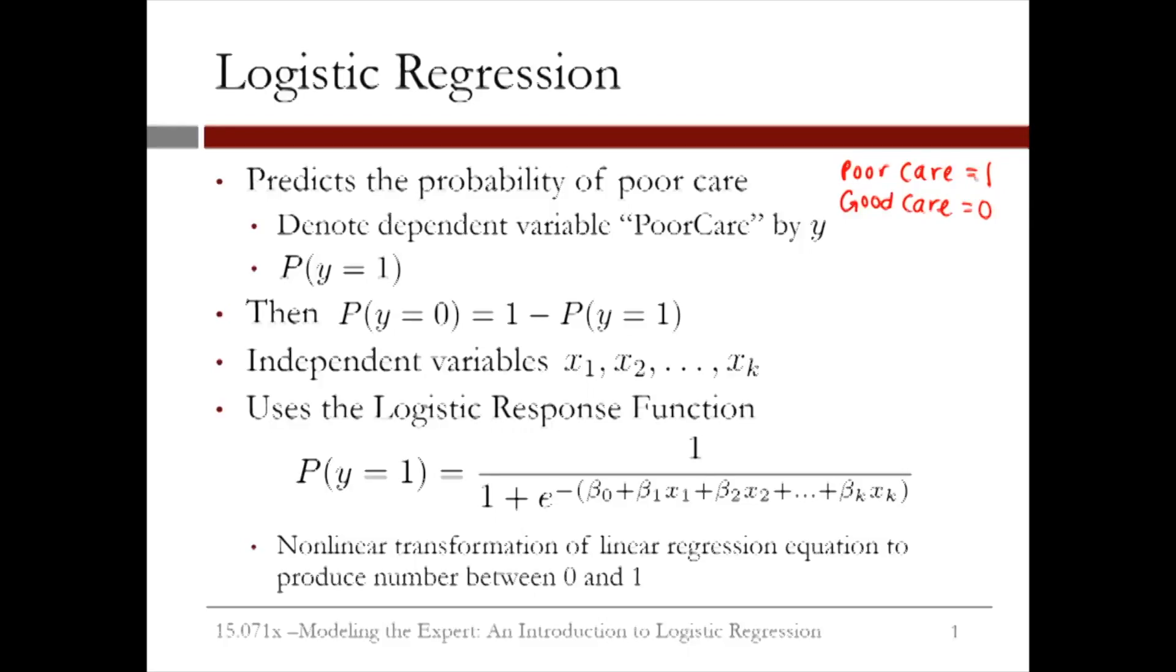Since the outcome is either 0 or 1, this means that the probability that the outcome variable is 0 is just 1 minus the probability that the outcome variable is 1. So by predicting the probability that y equals 1, we also get the probability that y equals 0.